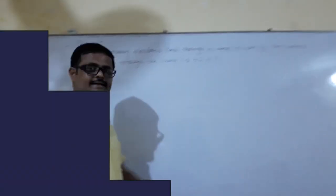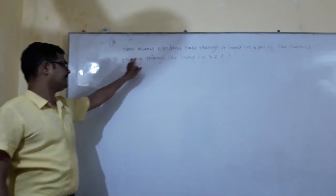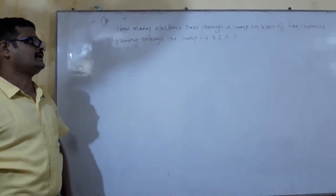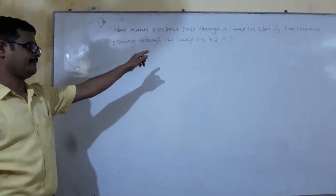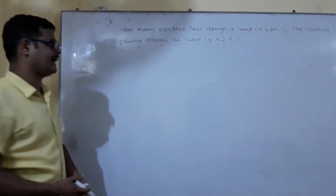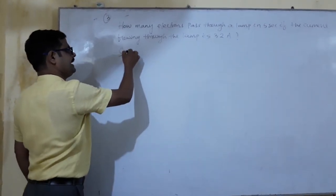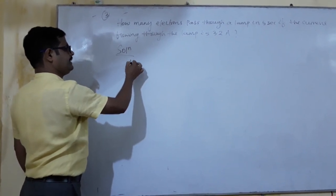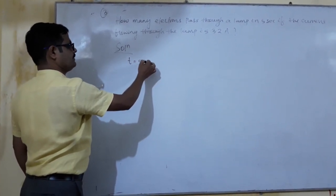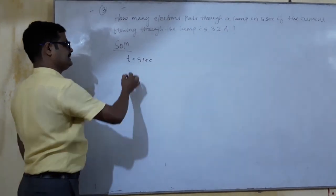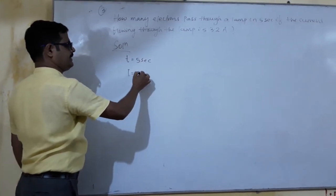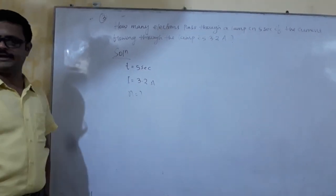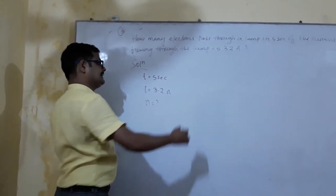Another type of question: how many electrons pass through the lab in 5 seconds if the current going through the lab is 3.2 amperes? What is given: time t equals 5 seconds, current i equals 3.2 amperes. We need to find the number of electrons.